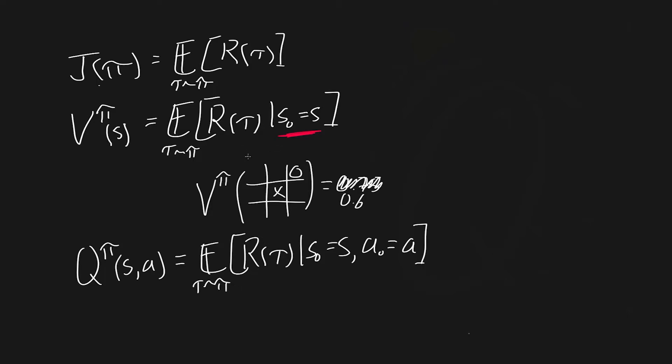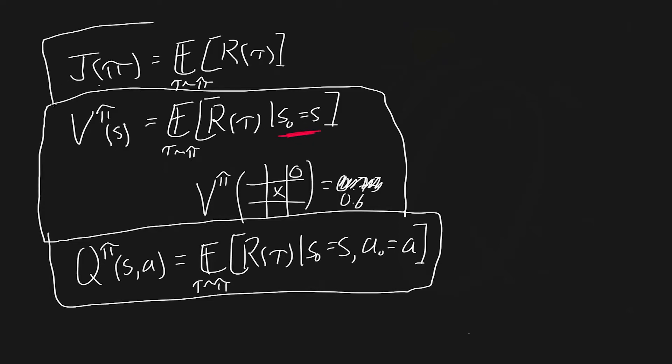So what does this mean? And how is this different from value? Here we have Q stuff and here we have value stuff. Well, how is this different from value? You'll notice there's this extra A term. We have an extra input parameter A, and we also have this extra condition A0 equals A. So if you understood what value was and how this S0 works, this is the same thing. For Q value, we put in an extra action, and that's now a condition. We have to start with that action. It's the expected return of a given state if we start with a certain action, and then after that all the actions are sampled via our policy.